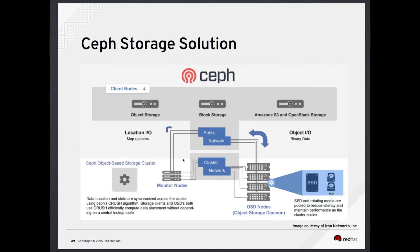Swift's storage policies can be used to create geographical zones in order to have complete control on how and where data is distributed. We can see the client nodes in our picture pointed to the object storage and the block storage that's needed, and we can also be tied into Amazon and regular OpenStack storage.